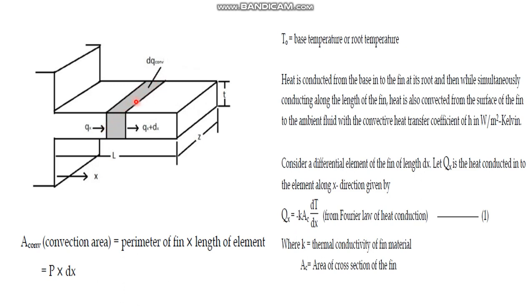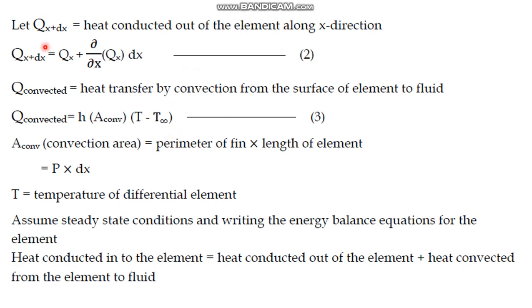The heat leaving the elemental area, qx+dx, is equal to the heat entering the elemental area plus the rate of increase of heat in the x-direction multiplied by the distance dx. This is the amount of heat leaving the elemental area by conduction.